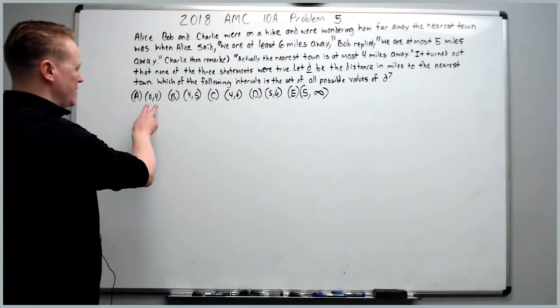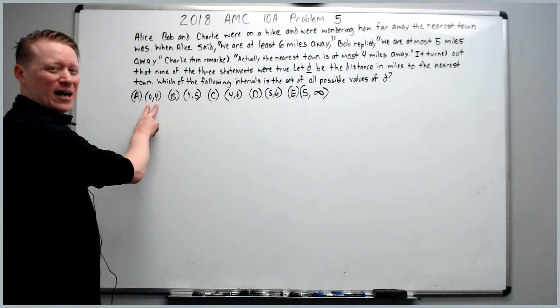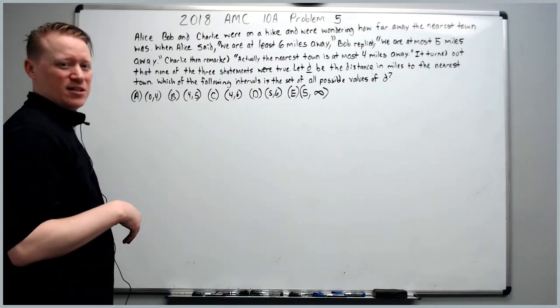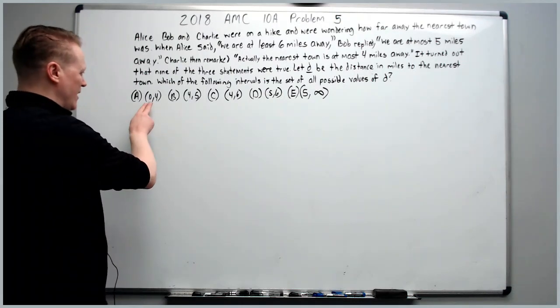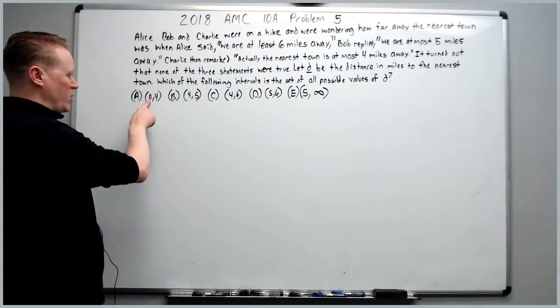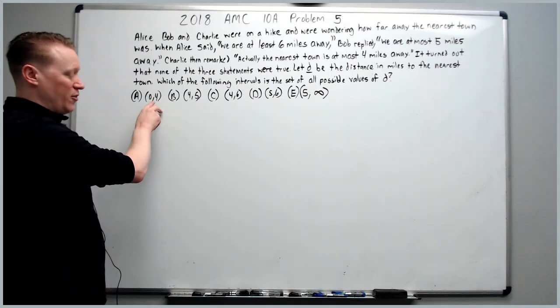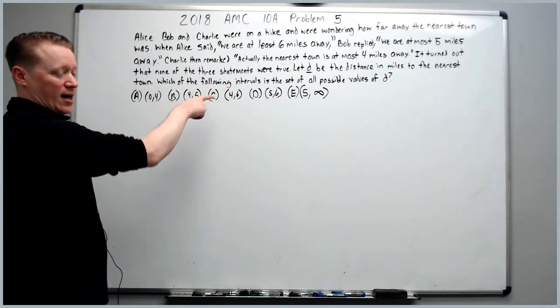It's important to understand from the answers these are not ordered pairs. It's called interval notation. You can look a video up on it. Maybe Khan Academy has it. It basically means that between 0 and 4 is that all these values are the interval it's talking about. And this one's between 4 and 5 and so on.